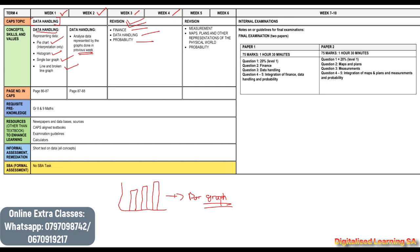Once we are done with week 3 and week 4, we will move to another revision in week 5 and week 6. Here we will cover measurements, maps, plans and other representations of the physical world, and we will also cover probability as well.